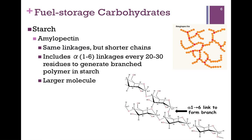Another polymer present in starch is amylopectin. We have the same type of alpha-1,4 linkages, illustrated at the bottom of the screen, except in this case they're shorter chains, and every 20 to 30 residues we have a branch point — that is an alpha-1,6 linkage. That leads to a very branched molecule, as illustrated in the cartoon at the top of the screen. It can be a much larger molecule; the benefit is we can store more glucose in the same amount of space. The center glucose residue is connected by alpha-1,4 linkages to a carbohydrate before it and following it, but there's also an alpha-1,6 link to another glucose molecule — that's the branch point.